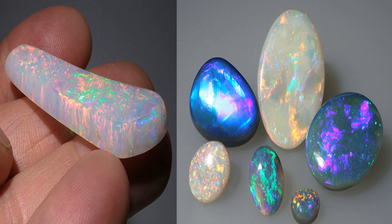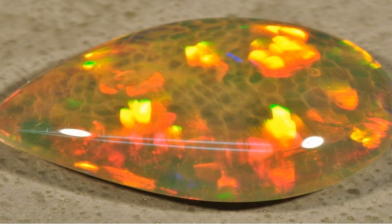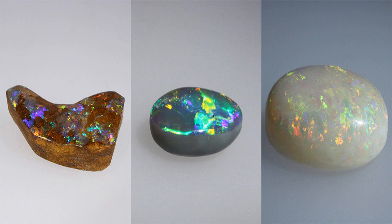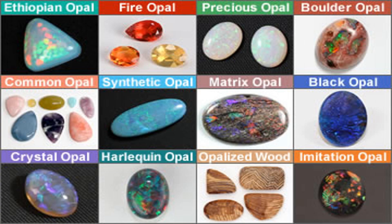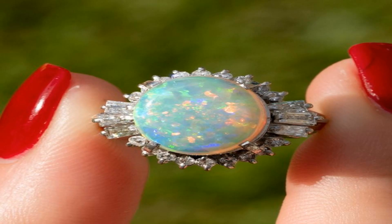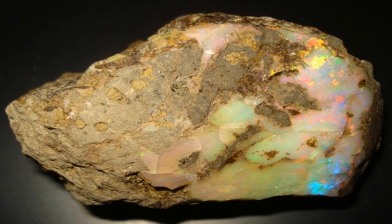Precious opals are the most famous type of opals and are known for their iridescent colors that change depending on the angle of observation. These opals are typically found in Australia and are formed in sedimentary rocks such as sandstone or shale. Depending on the color pattern, precious opals can be further classified into several subtypes such as white opal, black opal, boulder opal, and crystal opal. White opal has a light, milky appearance and is characterized by its pastel-colored iridescence. Black opal, on the other hand, has a darker black background color and is famous for its vibrant, bright colors.